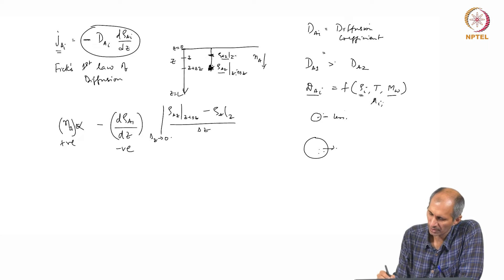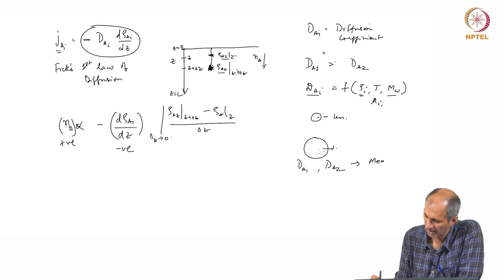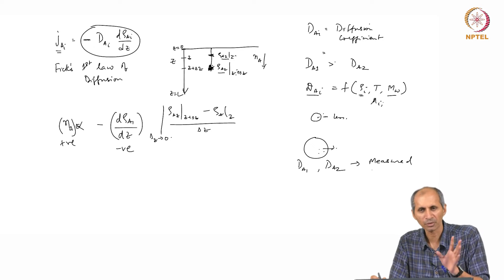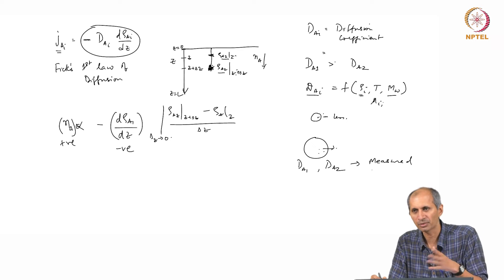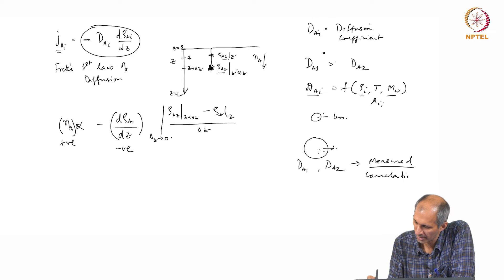A lot of D_Ai values are measured experimentally. We have D_A1, D_A2 — all measured. For environmental purposes, we measure D_A through air and through water, which are the two fluids we are interested in. These values are measured and there are also correlations to predict them.